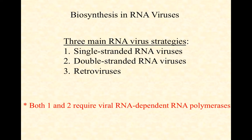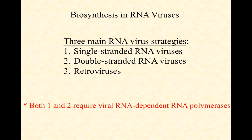There are three main RNA virus strategies: single-stranded RNA viruses, double-stranded RNA viruses, and retroviruses. Single-stranded and double-stranded RNA viruses require a unique RNA-dependent RNA polymerase. Your cellular RNA polymerase reads double-stranded DNA to make single-stranded RNA — it is DNA-dependent and cannot read RNA to make more RNA. So RNA viruses typically encode their own unique RNA-dependent RNA polymerase.